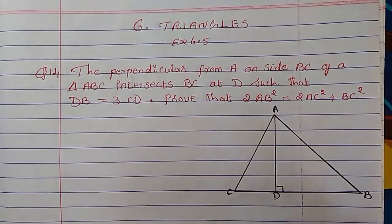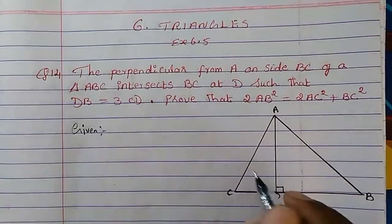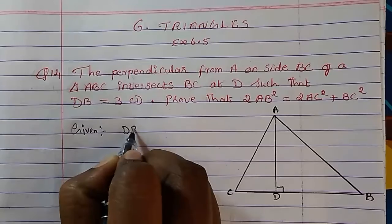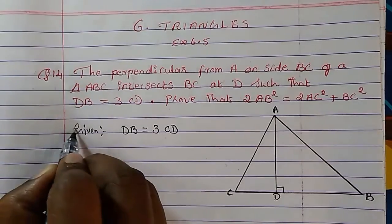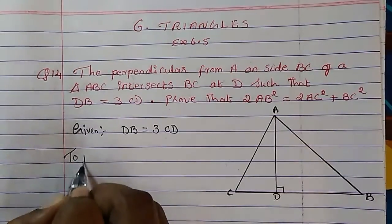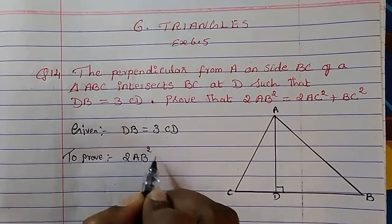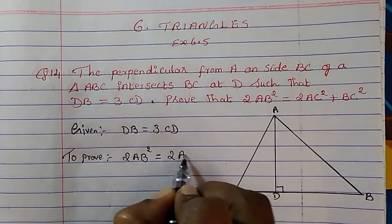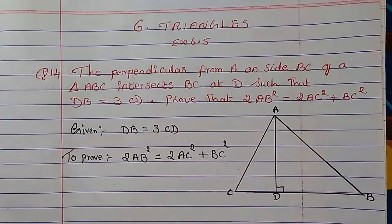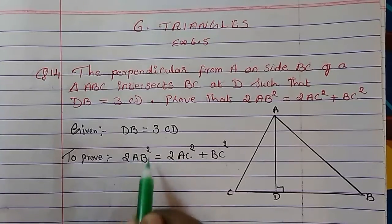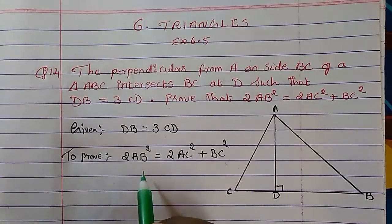Let's write down what is given to us and what we have to prove. Given: DB equals 3 times CD. We have to prove that 2AB² equals 2AC² plus BC². Whenever we see squares here — AB², AC² — we know we will use Pythagoras theorem to get them.